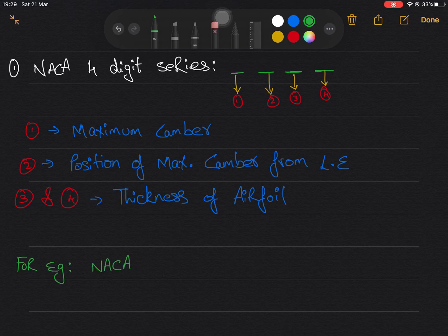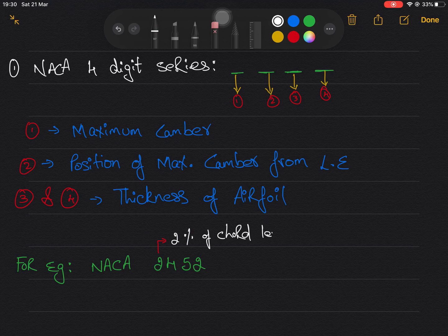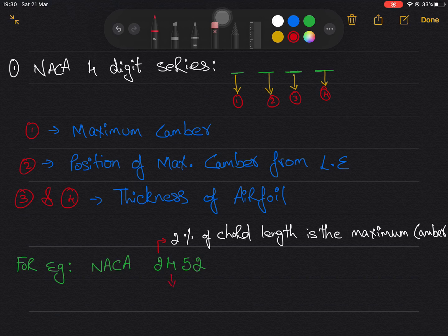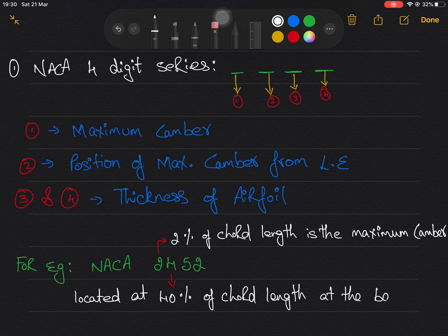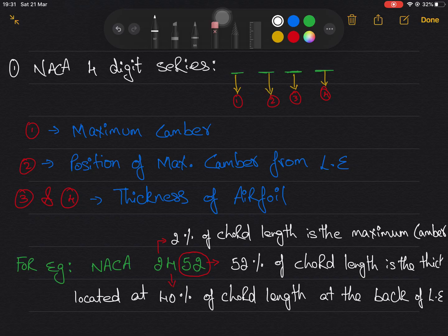Let's have an example. If we have an airfoil NACA 2452, this resembles 2 percent of chord is the maximum camber, which is located at the distance of 40 percent of chord back of the leading edge. Next two digits say the 52 percent of the chord is the thickness of airfoil.